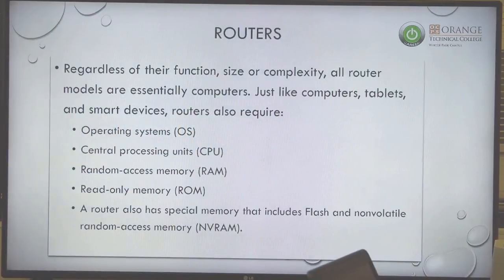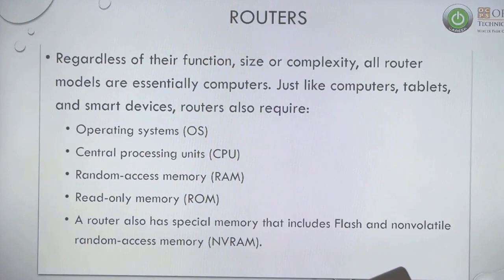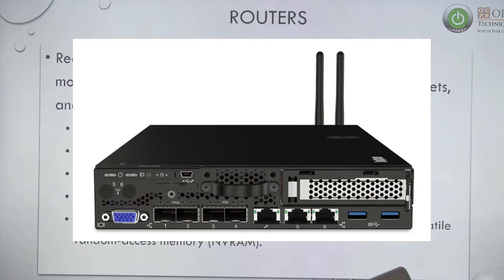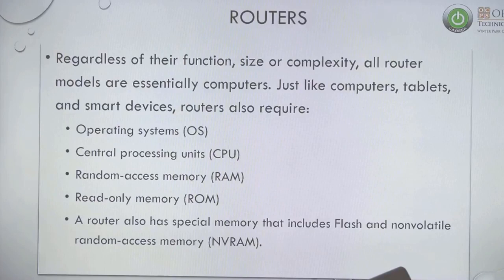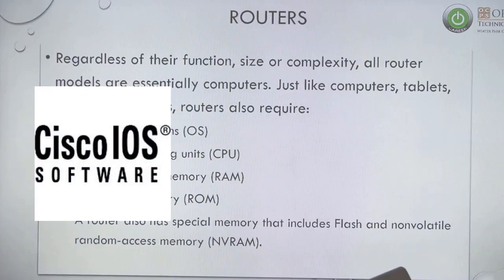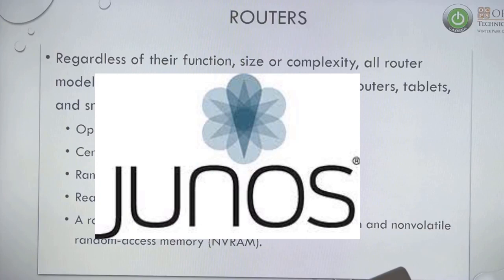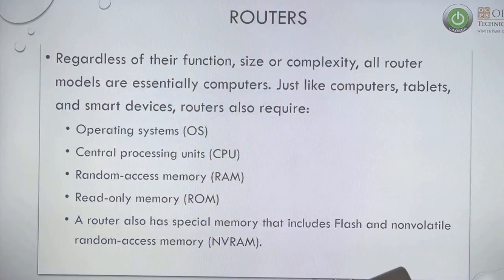The first piece of equipment we're going to look at is routers. Regardless of their size, cost, or complexity, all routers are basically computers. That is not true of a switch or many other devices, but of a router they are just like a computer. They're going to have an operating system — Linux is very popular, Cisco has their own proprietary IOS (a Berkeley version of Unix), and Juniper uses their own OS. So it's going to have an operating system, typically a Unix or Linux variant, and it's going to have a CPU.